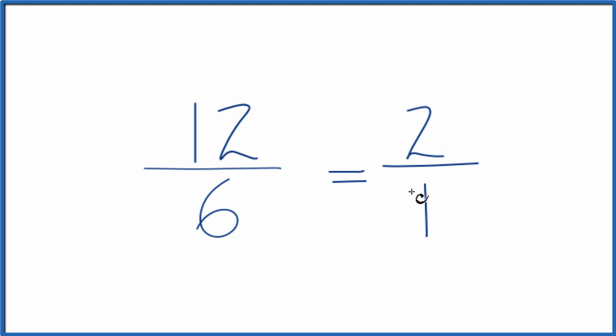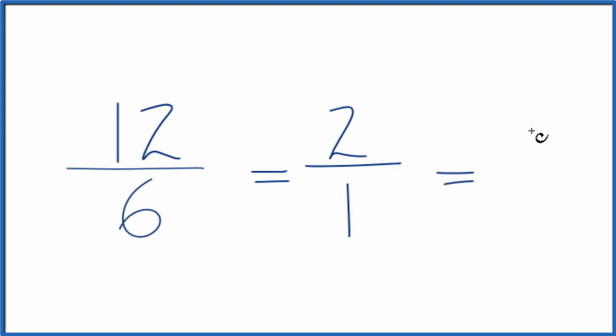2 over 1, that's just 2 divided by 1, so we could just call that 2, the whole number 2.